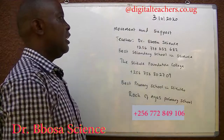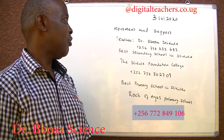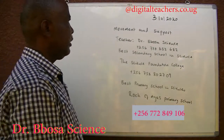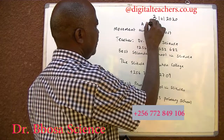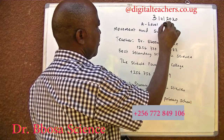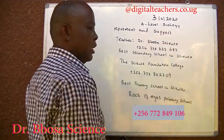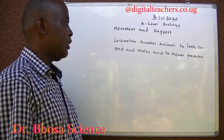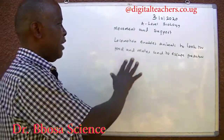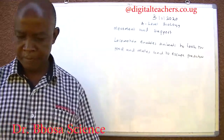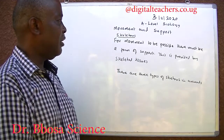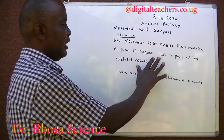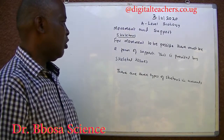Today, 3rd November 2020, we are going to study movement and support in A-level biology. Locomotion enables animals to look for food and mates and to escape predators. For movement to be possible, there must be a form of support. In animals, this is provided by skeletal tissues.